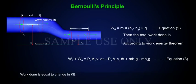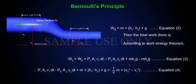Work done is equal to change in KE. Therefore, P1A1V1DT minus P2A2V2DT plus MH1G minus MH2G is equal to 1 by 2M into V2 square minus V1 square, equation 4.